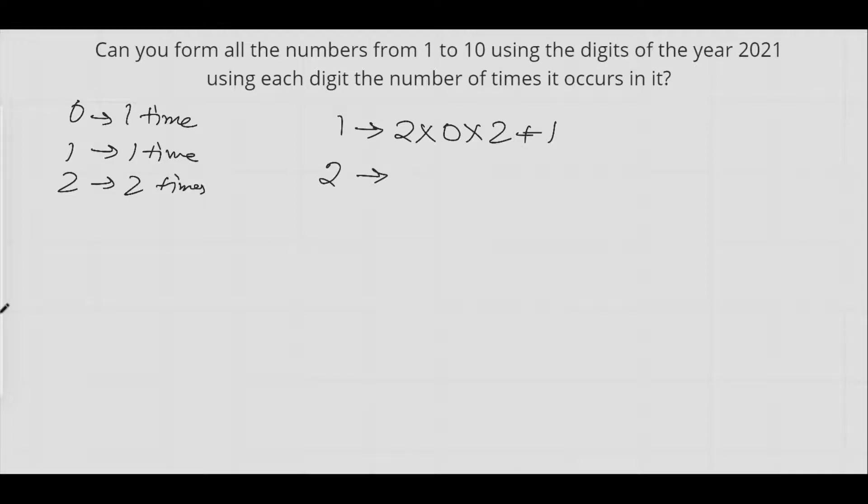This would be equal to 2×0×1+2. We can form three in a similar manner: 2×0+1+2. Four is 2×2+0×1.